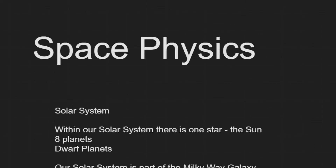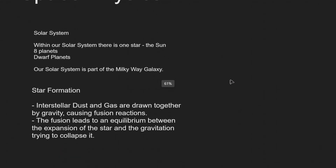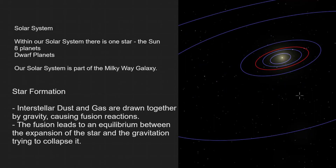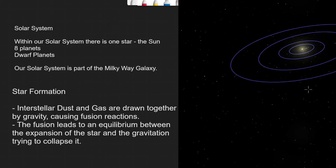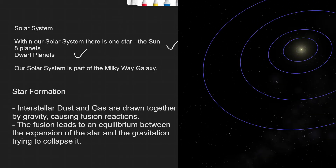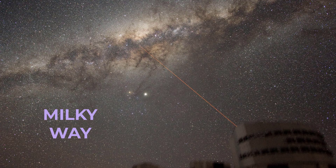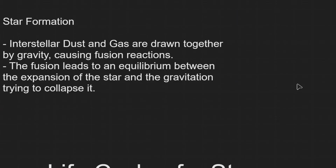Let's revise space physics. Starting off with our solar system, we need to know that within our solar system there's obviously just one star, which is the sun. There are also eight planets and we also have quite a few dwarf planets, and our solar system is part of the Milky Way galaxy.